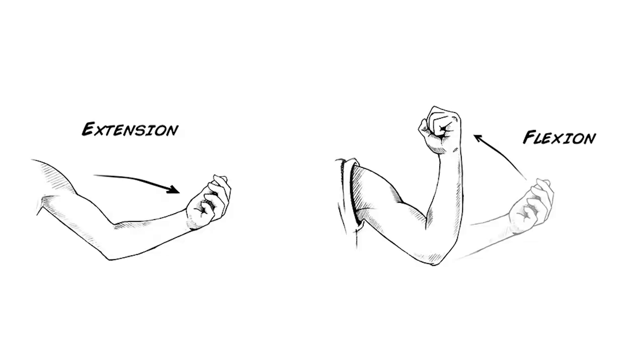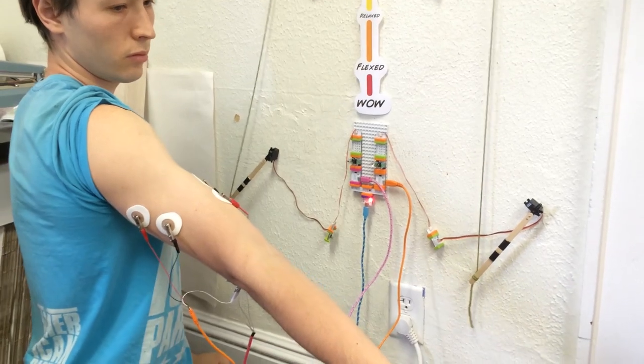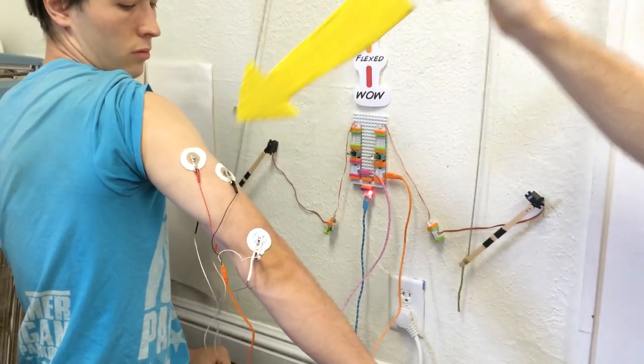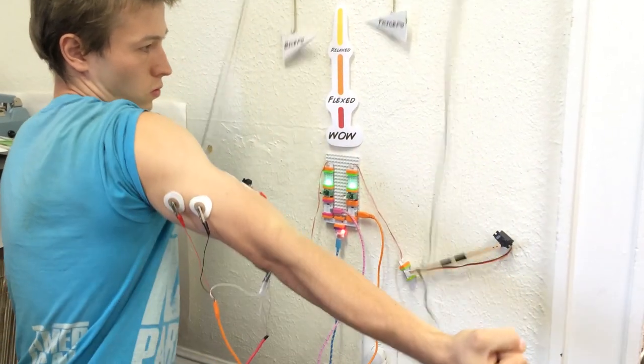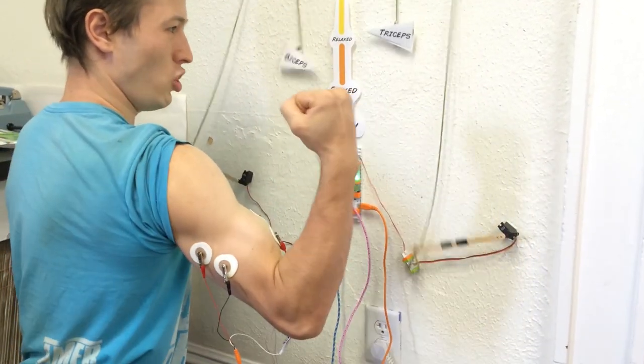First, let's use little bits to investigate antagonistic pairs of muscles. To do this, we'll place one set of electrodes on the biceps, another set of electrodes on the triceps. And now we can directly observe which muscle groups are activated during flexing and extending. Can you figure it out?